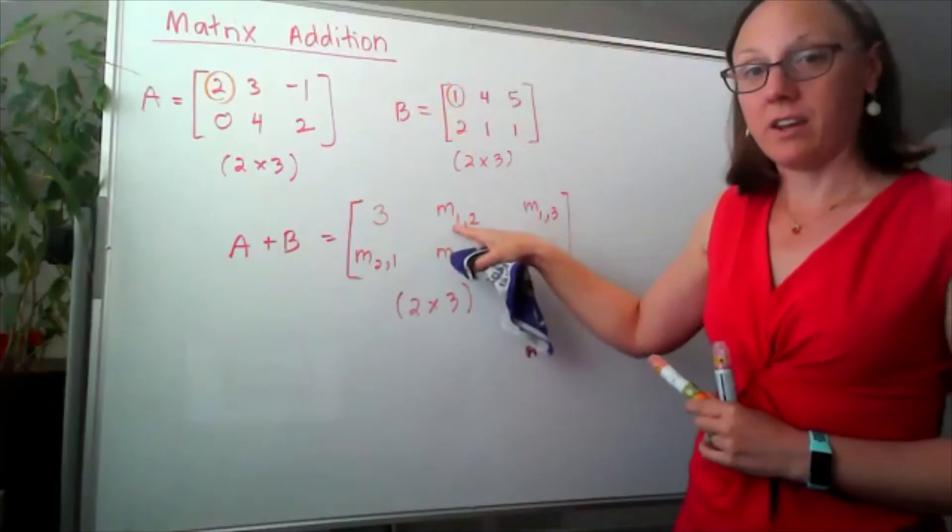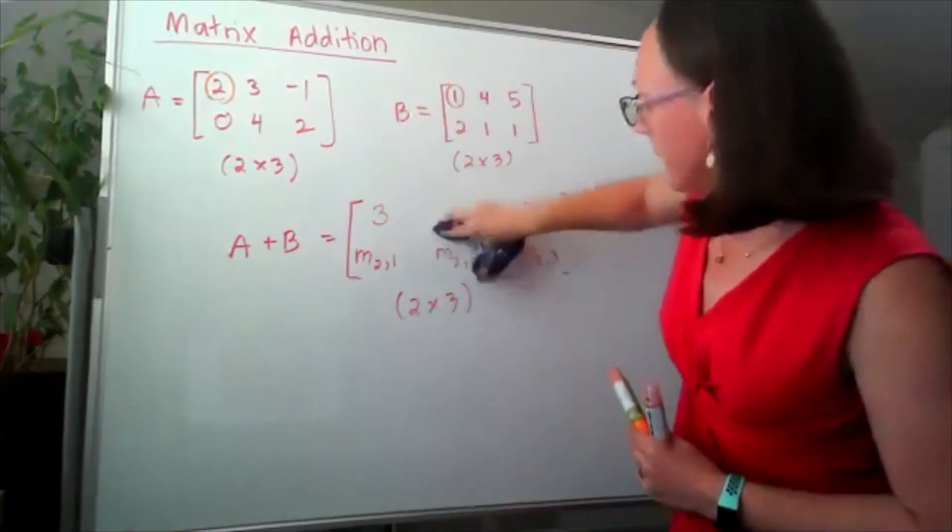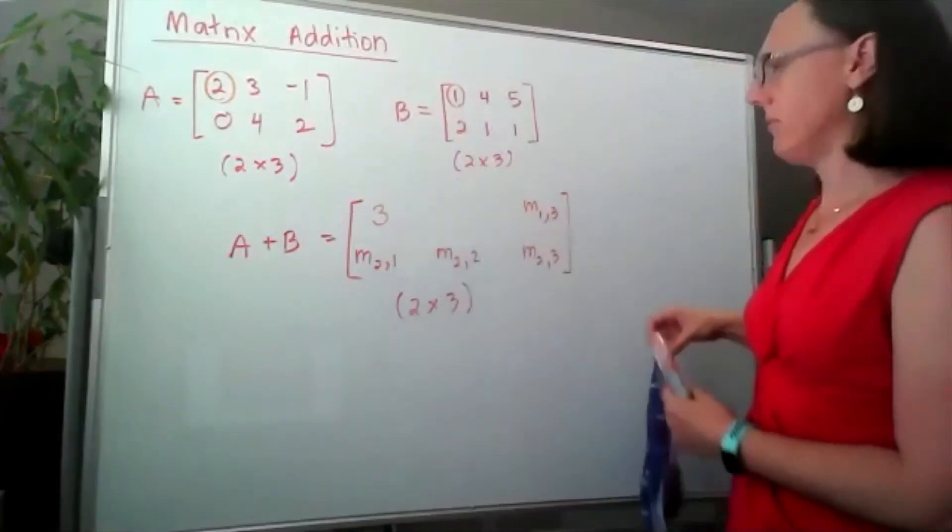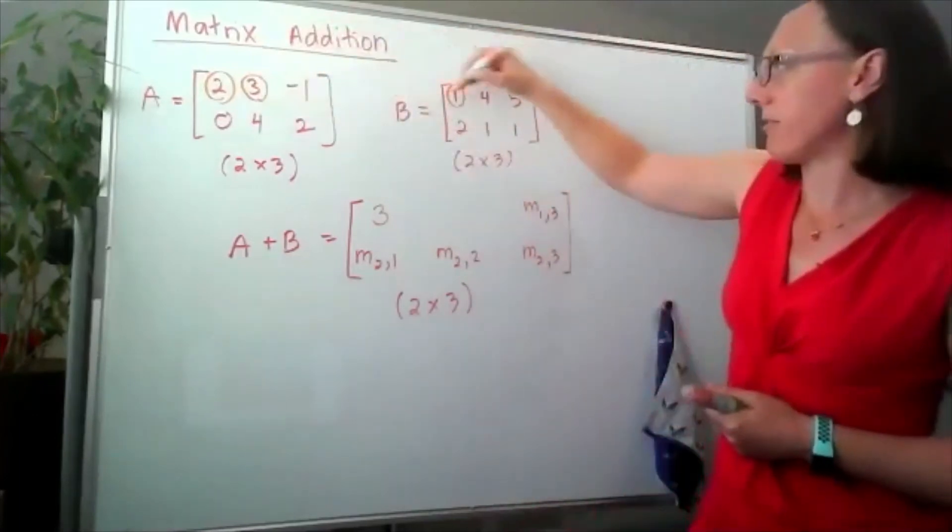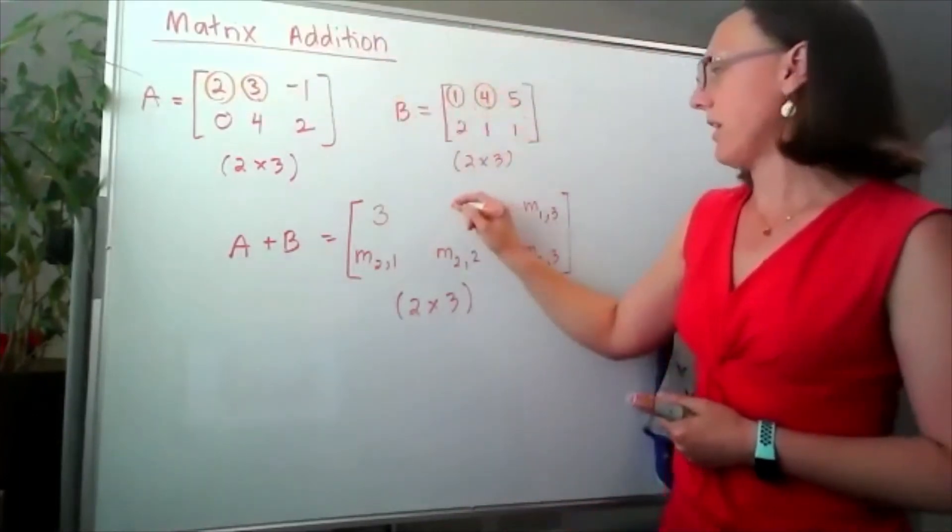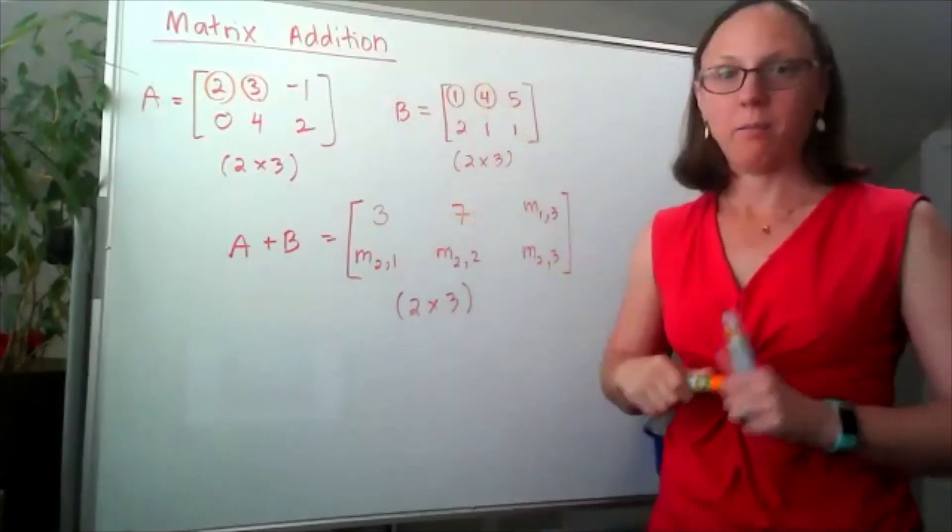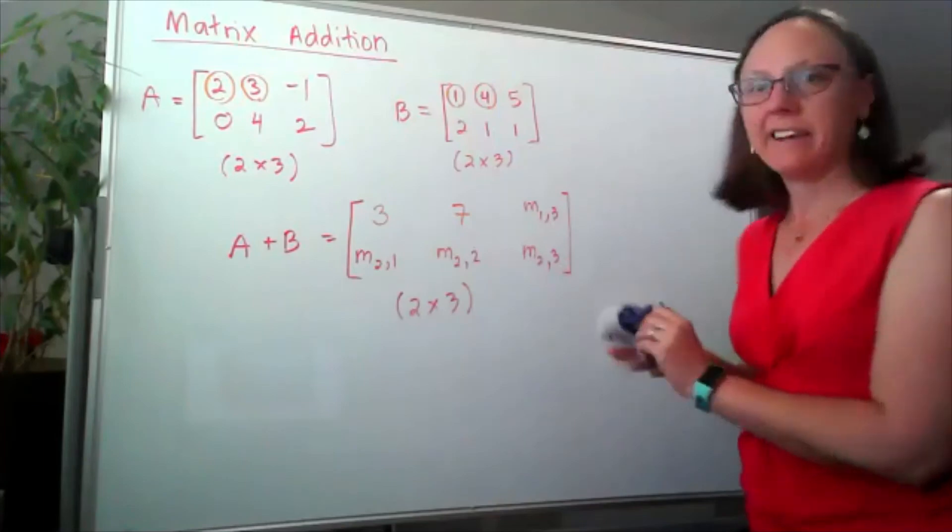Now I'm looking for the first row, second column. So, first row, second column entry, first row, second column entry, three plus four, I'm looking at seven, kind of going to hit fast forward here, erase all of these and just do the addition.